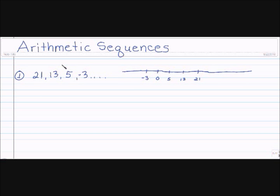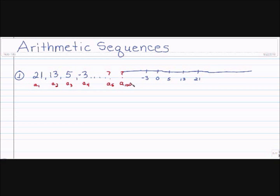Here I have a number line. When determining sequences, my first step is to check out the differences. One way to do it is to say I'm looking for a number — I'm either subtracting, multiplying, adding, or dividing in order to get the next number. This is my first number in the sequence, or a1; this is a2; this is a3; this is a4. I'm going to show you how to determine even the hundredth number in the sequence. In order to do that, we need to find out the difference.